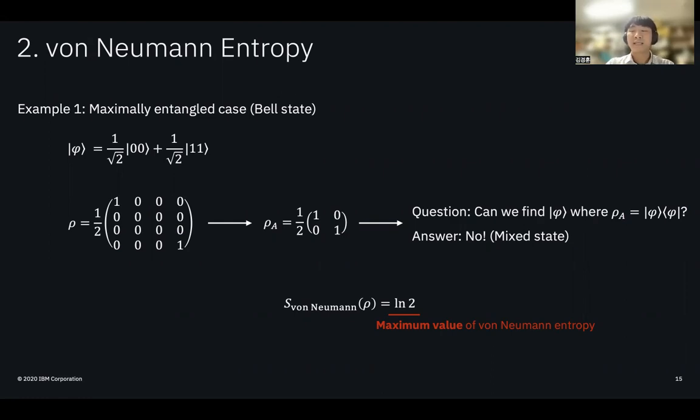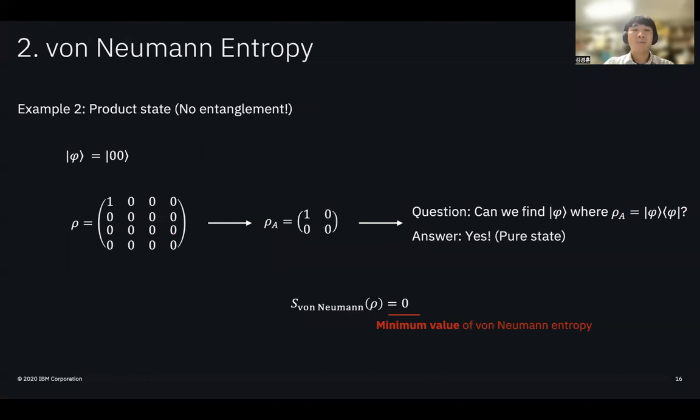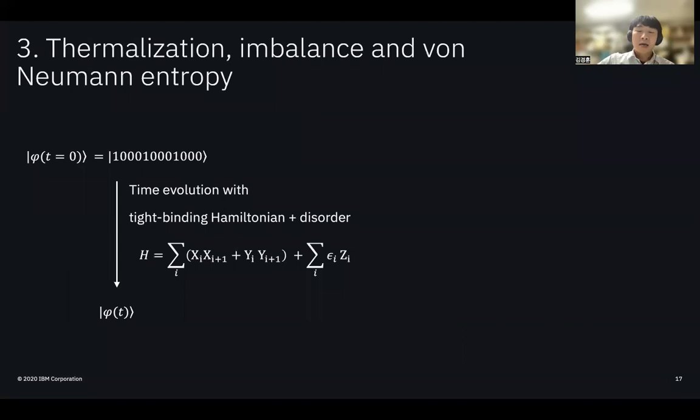In this case, the von Neumann entropy is ln(2), and since we know that these cases have maximum entanglement, we can deduce that ln(2) is the maximum value for von Neumann entropy. However, with product state, von Neumann entropy is zero, and since there is no entanglement between A and A-bar in this case, we can check the minimum value of von Neumann entropy is zero.